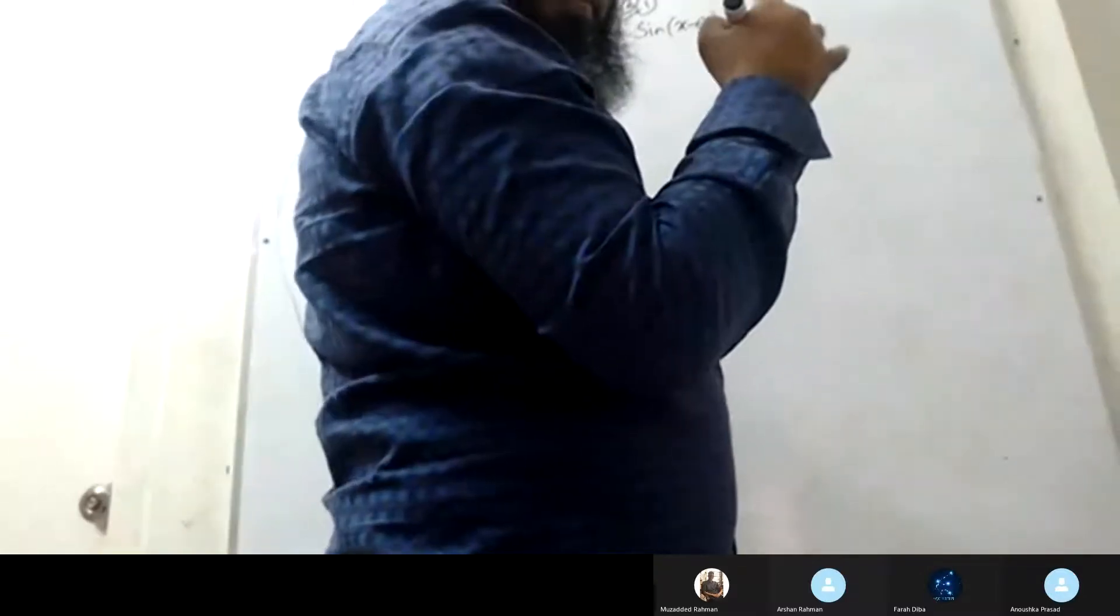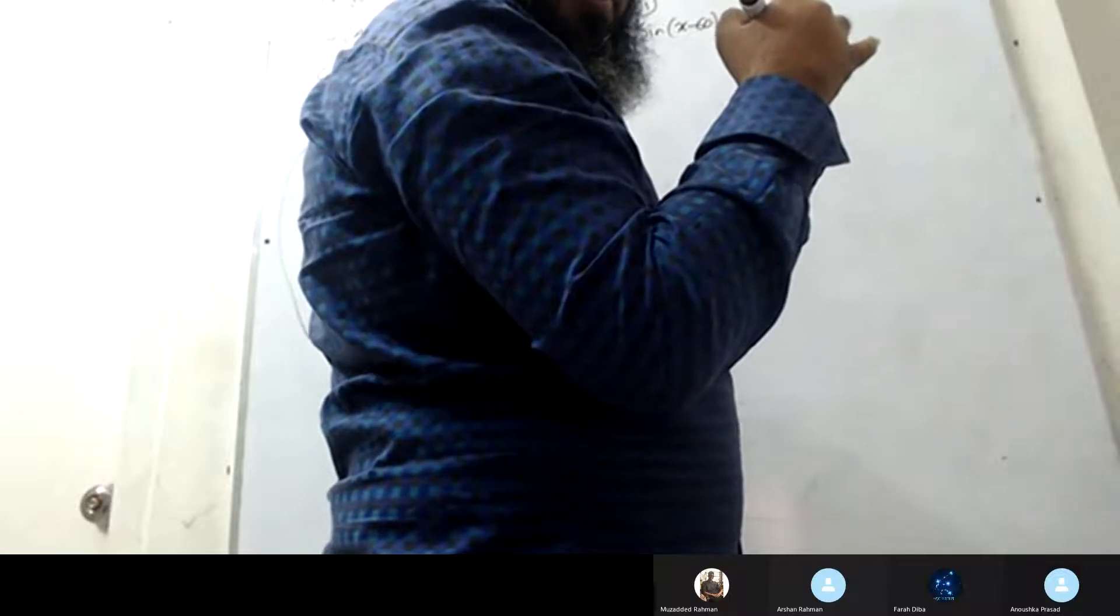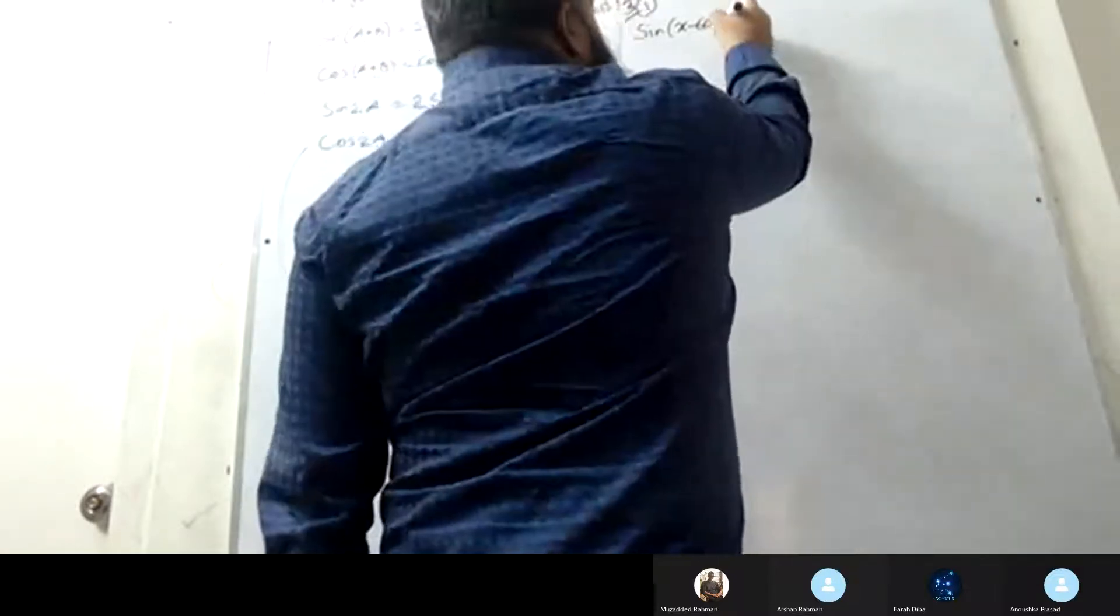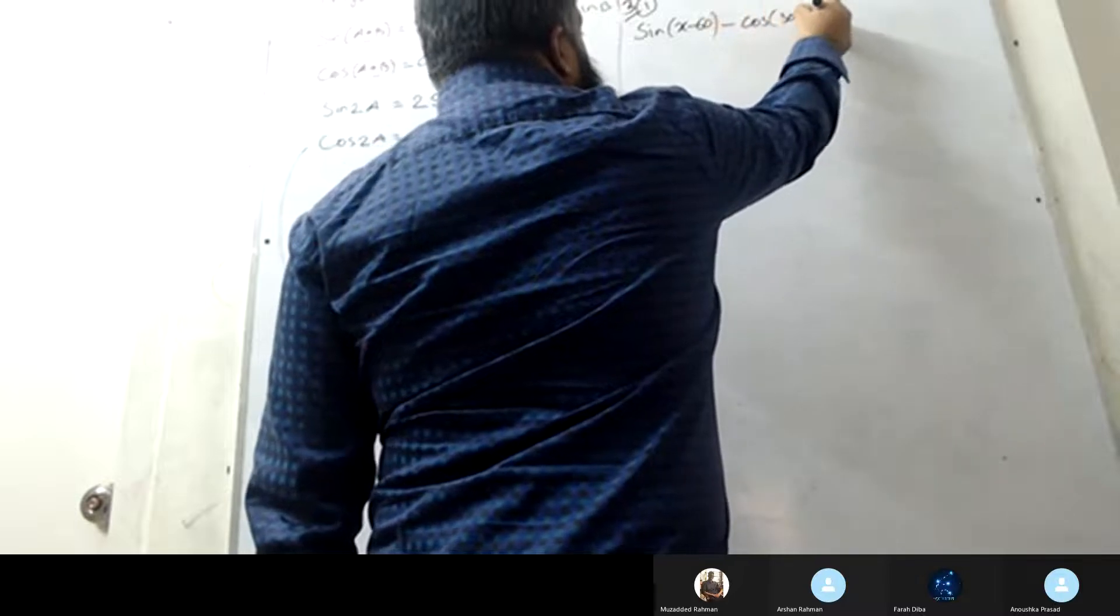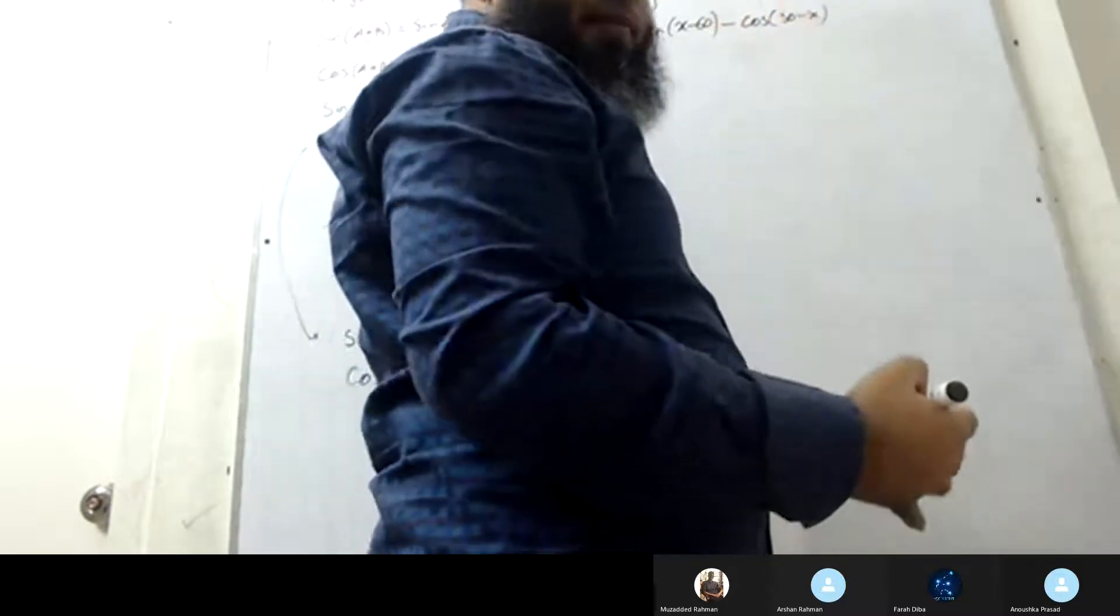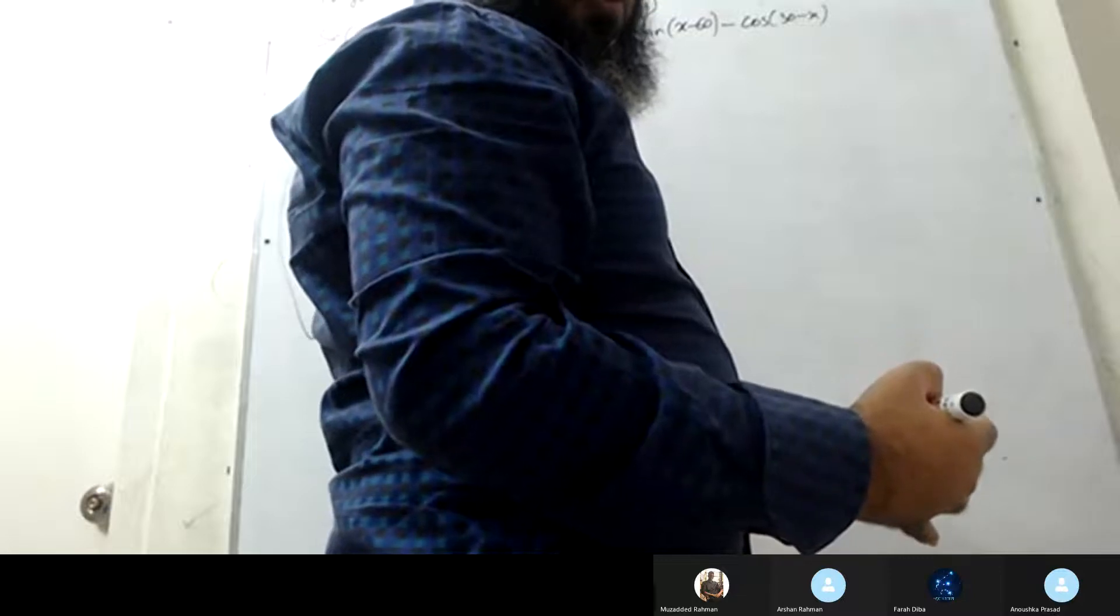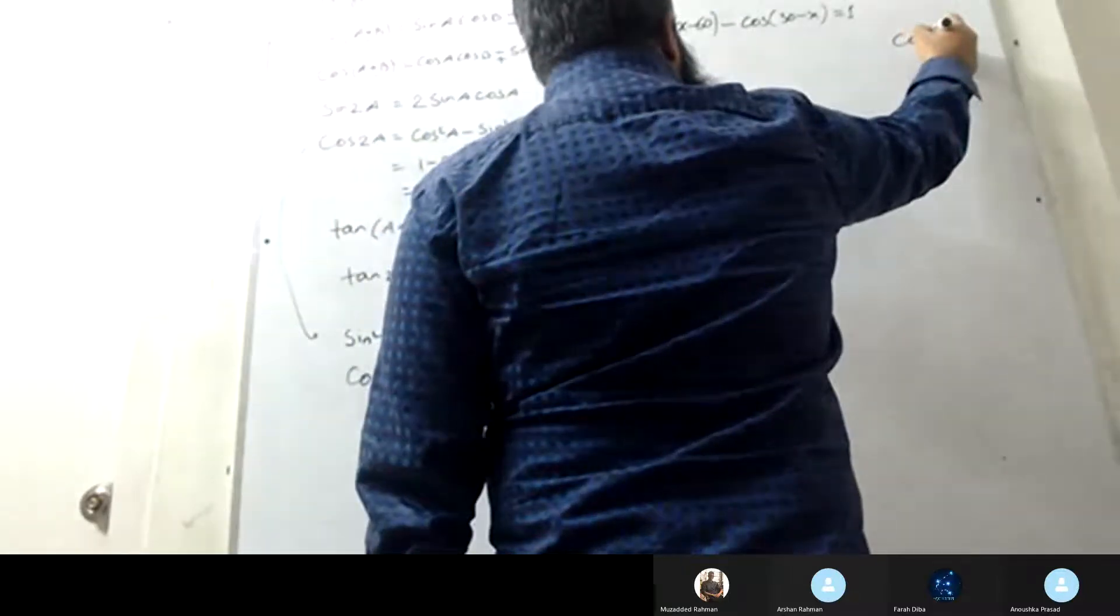Show that the equation sine x minus 60 minus cos 30 minus 6 equals to 1 can be written in the form cos x equals to k.